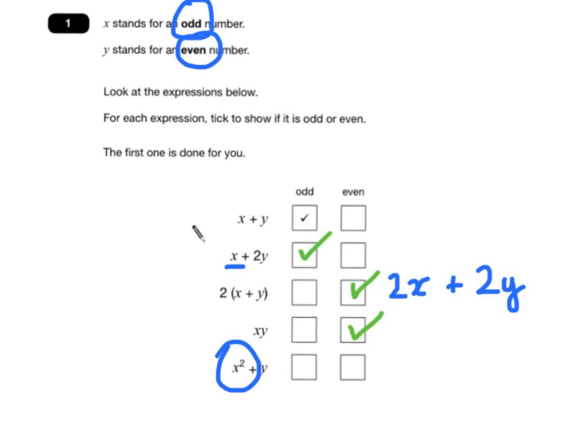3 squared is 9, which is odd. 5 squared is 25, which is odd. 7 squared is 49, which is odd. So the x squared will always be odd, and therefore x squared plus y will also be odd.